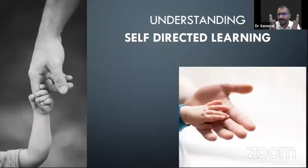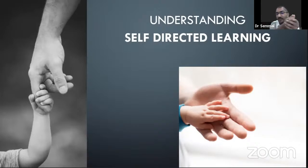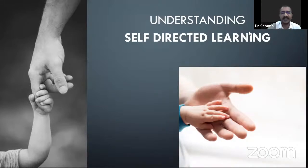Learning is of two types. When we walk with our father, he holds our hands and takes us in the garden. But one stage comes when we no longer hold his hand tightly — we just touch it, because we know how to walk. That is what this symbolizes: they are going to learn not alone, but not with the teacher either. That is the beautiful world of self-directed learning.